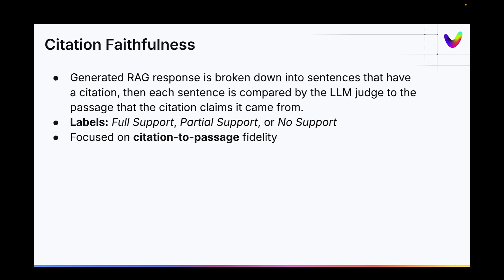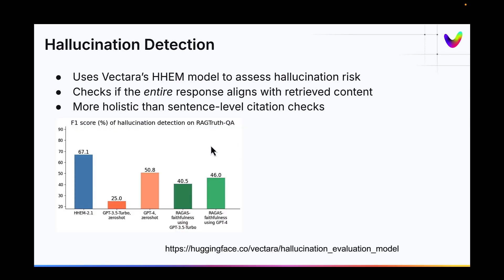The third metric is Citation Faithfulness, which essentially measures whether the citation — the passage — is high fidelity: fully supported, partially supported, or has no support in the response. The last metric uses HHEM, Vectara's hallucination detection model, to check if the entire response aligns with the retrieved content.